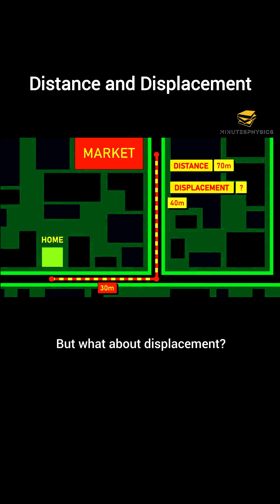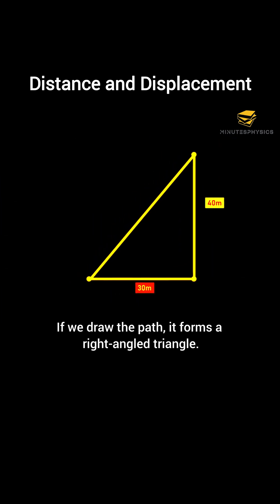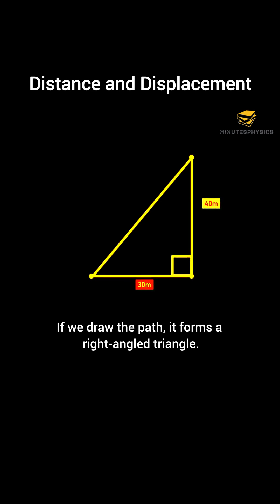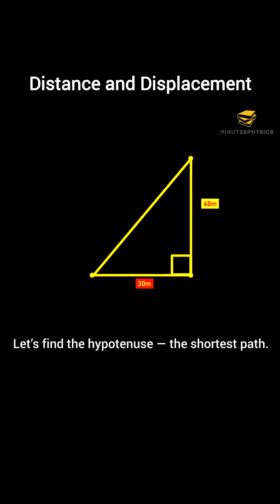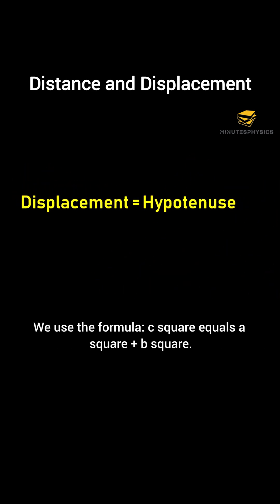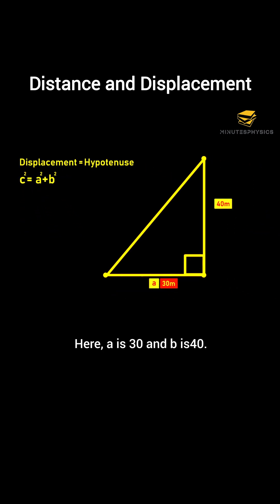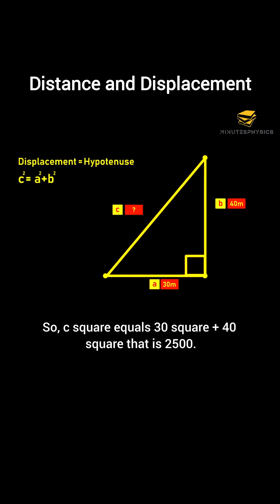But what about displacement? Displacement is the shortest path from home to market. If we draw the path, it forms a right-angled triangle. Let's find the hypotenuse — the shortest path. We use the formula: c squared equals a squared plus b squared. Here, a is 30 and b is 40. So, c squared equals 30 squared plus 40 squared, that is 2,500.